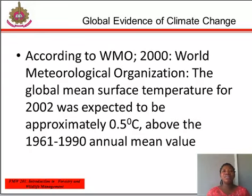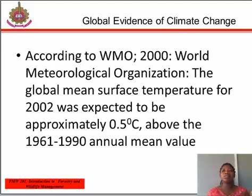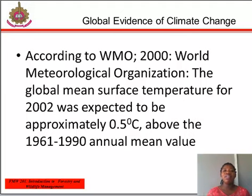Global evidence of climate change: The global mean surface temperature for 2002 was expected to be approximately 0.50°C above the 1961 to 1990 annual mean value, according to the World Meteorological Organization in 2002. The rise in global average surface temperature since 1910 now exceeds 0.60°C. According to El Niño conditions, which returned to the tropical Pacific in 2002, characteristic sea surface and sea level pressure patterns became well established.